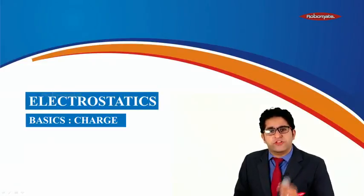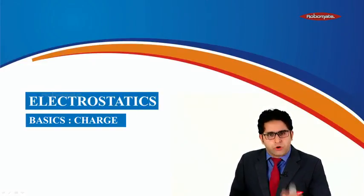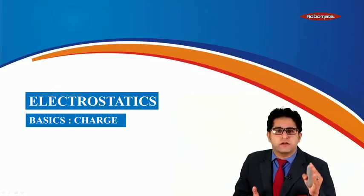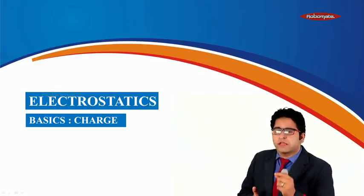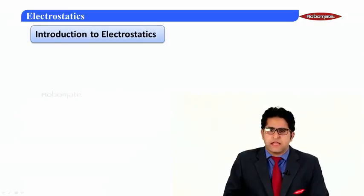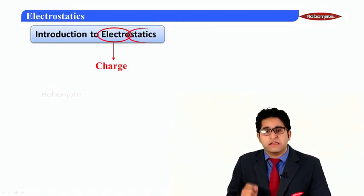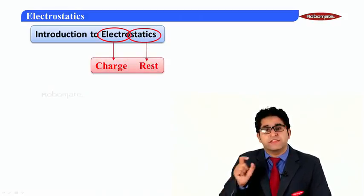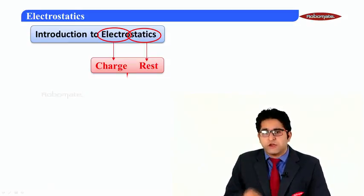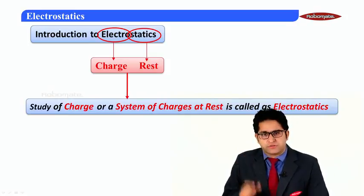Let us start with a very interesting topic of physics paper 2 — electrostatics. This topic has been divided into several modules; the initial modules will revise concepts from standard 11th before moving to standard 12th. The word 'electrostatics' can be divided into two parts: 'electro', which refers to charge, and 'static', which means at rest. So electrostatics is defined as the study of charge or a system of charges at rest.